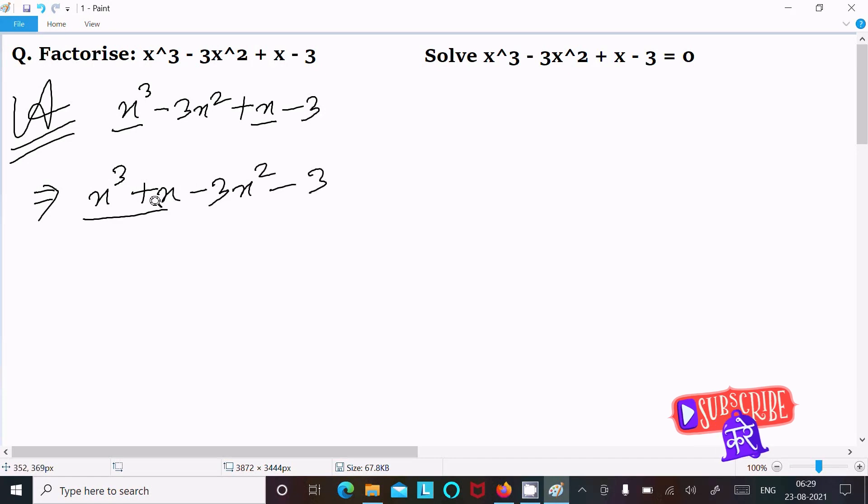So between these two, x is the common. So this here x(x² + 1). Minus 3 is the common. So here -3(x² + 1).